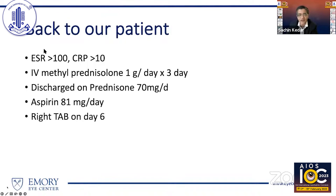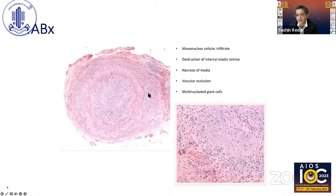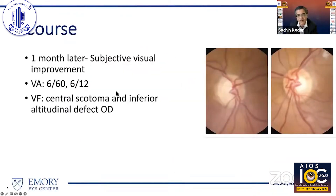Back to our patient: high ESR and high C-reactive protein confirmed giant cell arteritis. Patient was treated with IV methylprednisolone one gram per day for three days, then discharged on oral prednisone 70 milligrams per day and aspirin. Biopsy showed classical GCA with dense inflammatory infiltrate, giant cells in blood vessels, and vascular occlusion. A month later, there was slight improvement — 6/60 in the right eye and 6/12 in the left eye.